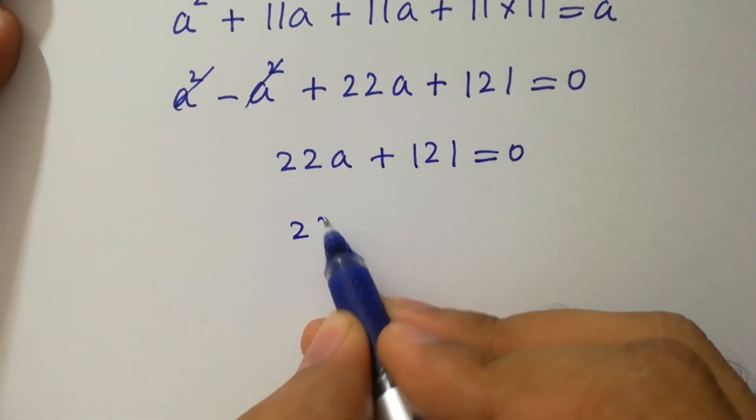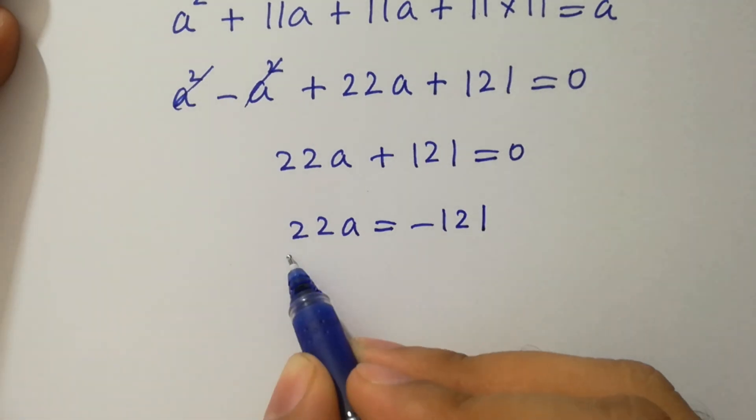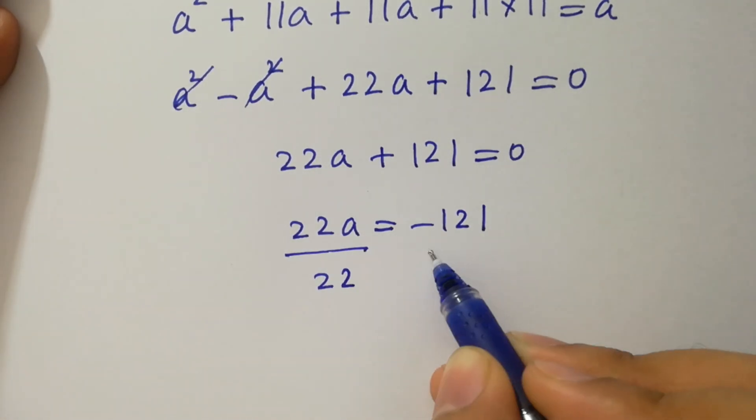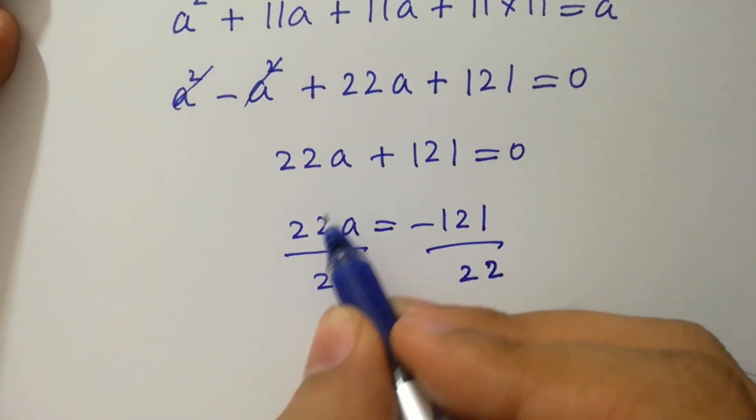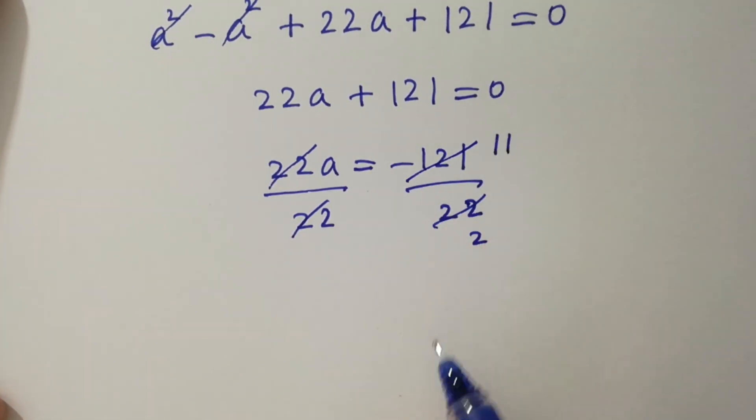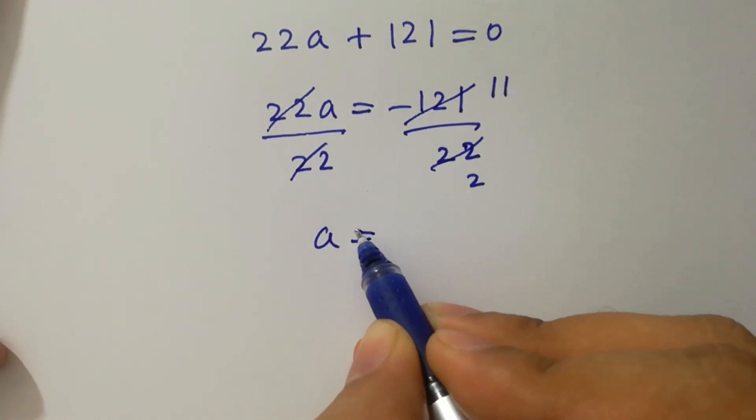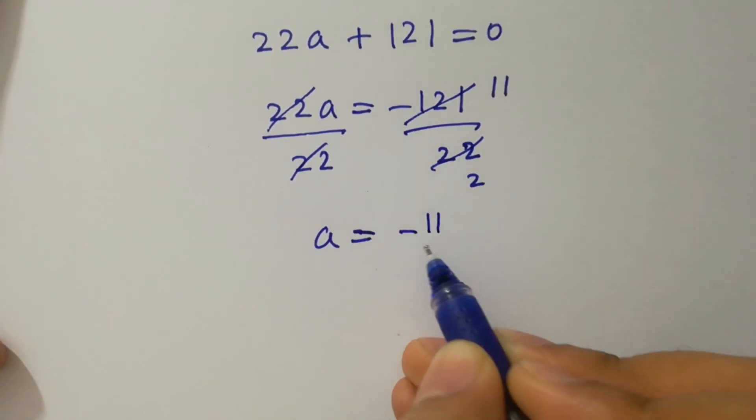22a equal to minus 121. To find a, divide by 22 on both sides. 22 cancels, 121 divided by 22 equals a equal to minus 11 over 2.